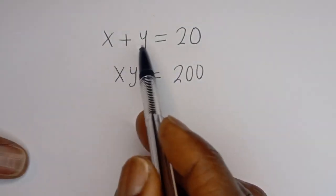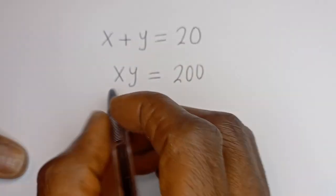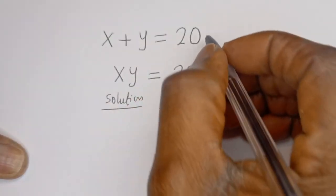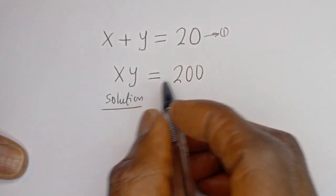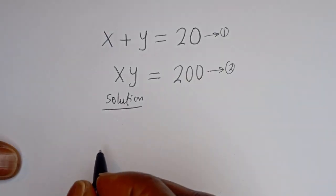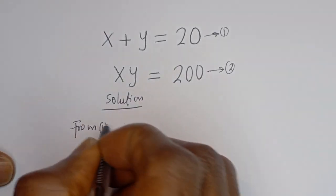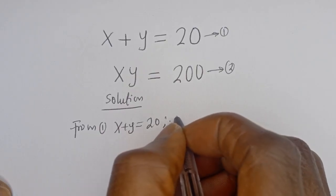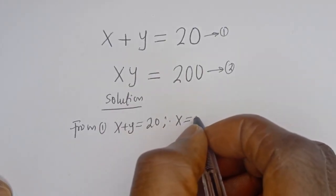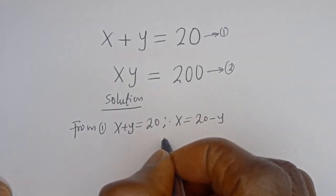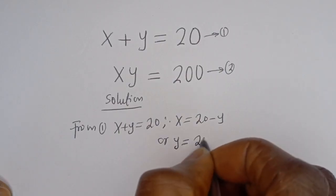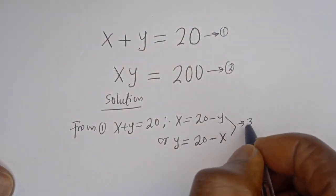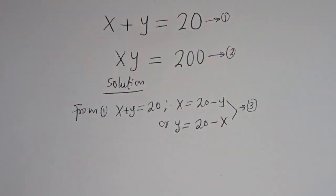Hello. How to solve for x and y in this equation: x plus y is equal to 20, and x times y is equal to 200. Here, x plus y equals 20 — let's call this equation 1. x times y equals 200 — let's call this equation 2. From equation 1, x plus y equals 20, therefore x equals 20 minus y, or y equals 20 minus x. Let's call this equation 3.